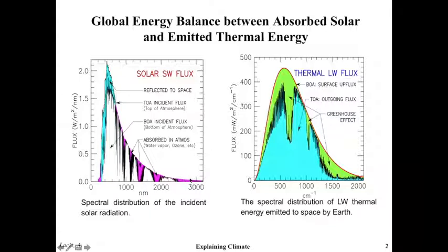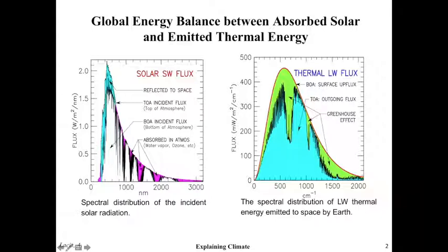On the left is again a Planck curve, but this is for the sun — about 5,700 degrees. Incident on the Earth, part of it gets reflected — that's in blue — about 30 percent of the radiation gets reflected. About 20 percent gets absorbed in the atmosphere by water vapor, carbon dioxide, and oxygen. And the rest gets absorbed at the ground. So that presents the incoming and outgoing energy balance of the Earth.